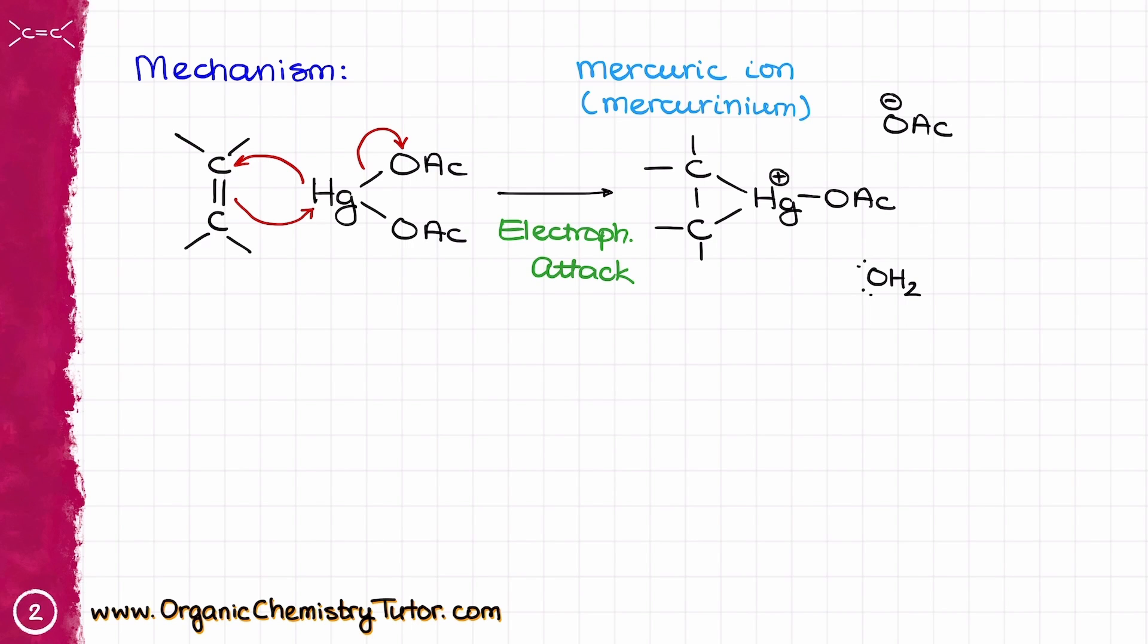As a result of this electrophilic attack on our double bond, we are going to form a mercuric ion, which is sometimes also referred as a mercurinium ion. Those are synonymous to each other and both terms are perfectly fine.